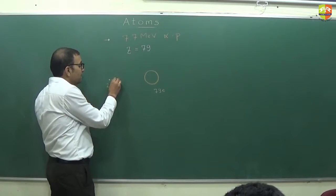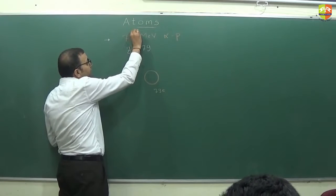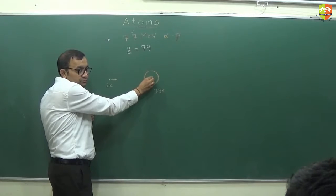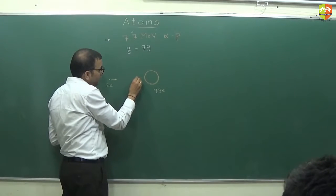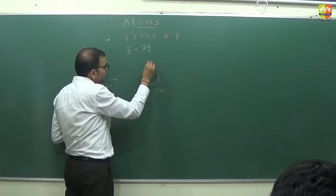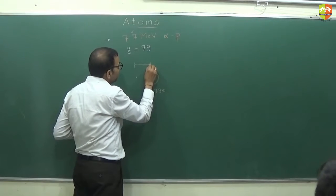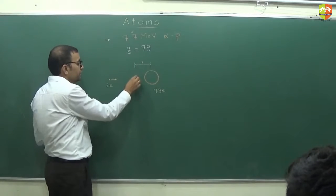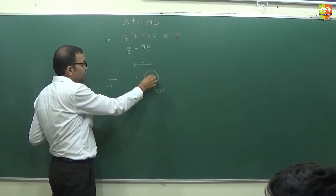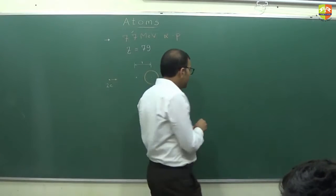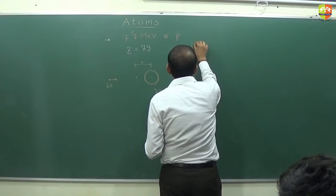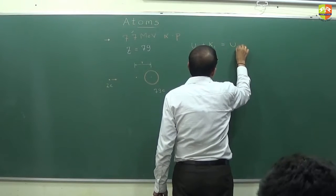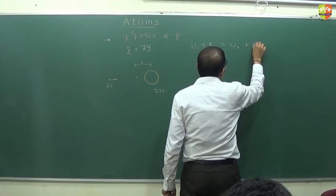Initially, the alpha particle has a kinetic energy of 7.7 MeV, and the potential energy between the alpha particle and nucleus is zero since they are infinitely separated. Then suppose it comes very close — this is the distance of closest approach, call it r. The potential energy between the two charges can then be written down.